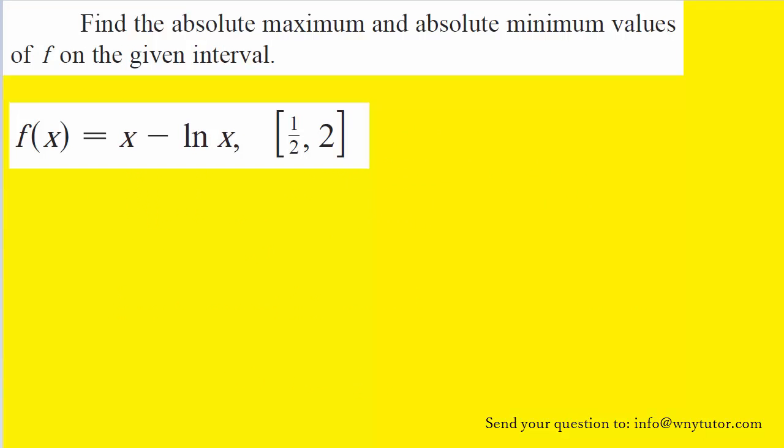In order to find the absolute maximum and absolute minimum values of a function on a particular interval, we're going to have to use what is known as the closed interval method. So let's take a look at that method.